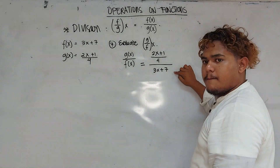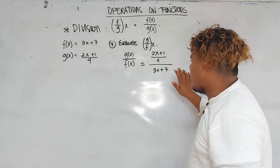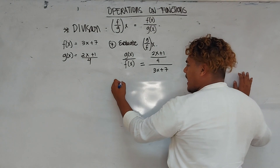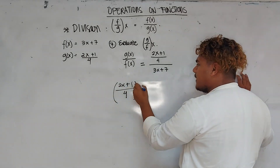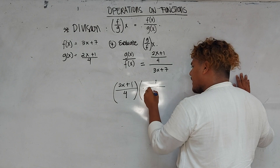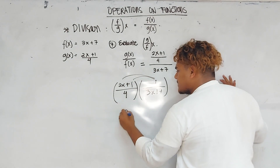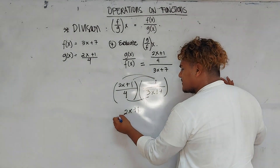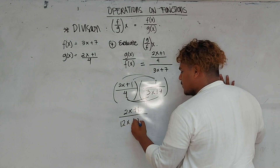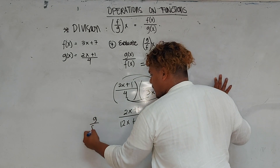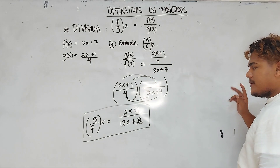We have a fraction over a whole number. What will happen to the whole number in the denominator? The denominator will be reciprocated. So the next process: 2x plus 1 over 4 times the reciprocal of 3x plus 7, which is 1 over 3x plus 7. 2x plus 1 times 1 is 2x plus 1; 4 times 3x is 12x; plus 7 times 4 is 28. So the final answer for g over f of x is equal to 2x plus 1 over 12x plus 28.